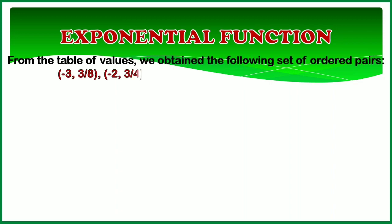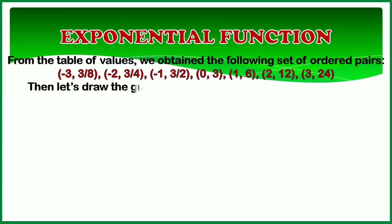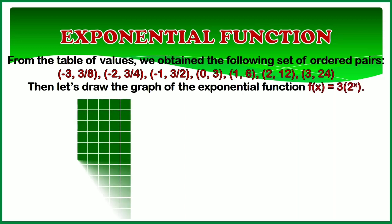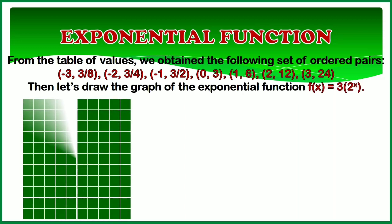From the table of values, we obtained the following set of ordered pairs: negative 3 and 3 eighths; negative 2 and 3 fourths; negative 1 and 3 halves; 0 and 3; 1 and 6; 2 and 12; 3 and 24.